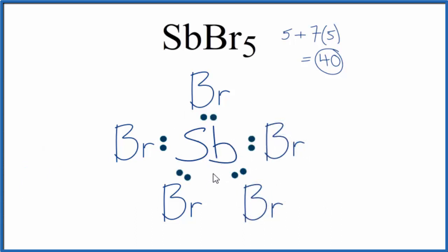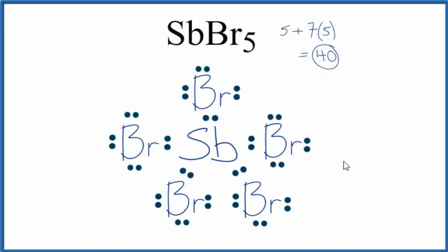SB has more than 8, that's okay, it can have an expanded octet. Then we'll complete the octets on the bromine atoms here. So now each bromine has an octet, the central SB has 10, but that's okay, we've used all 40 valence electrons.